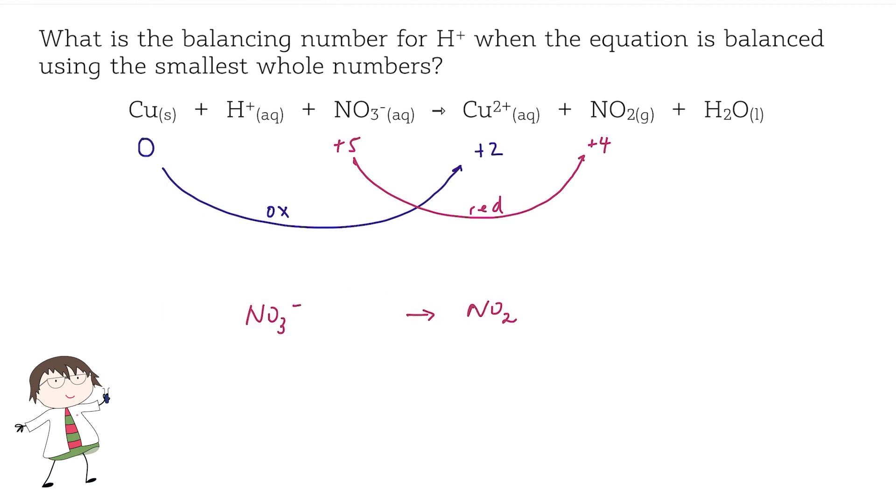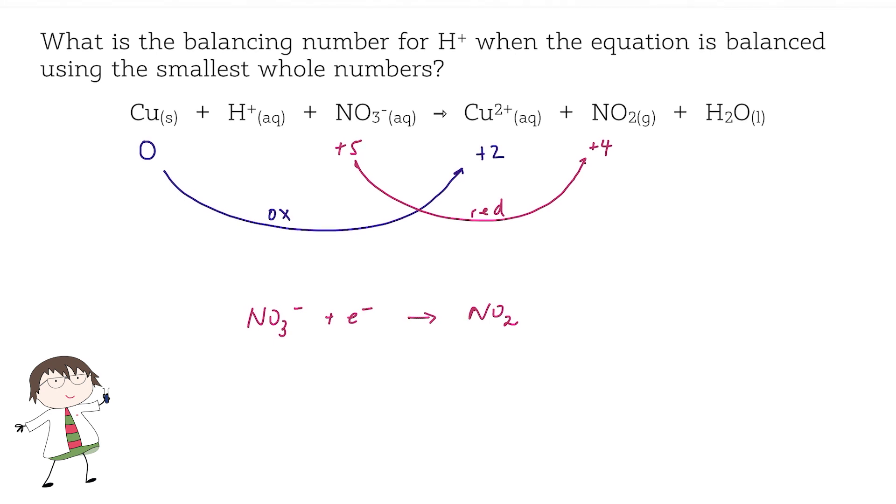In our reduction half equation, we can see that each nitrogen must have gained an electron in order to move from an oxidation state of plus five to plus four. However, this half equation is not complete because we need to balance out the oxygens, and we do that by adding water.